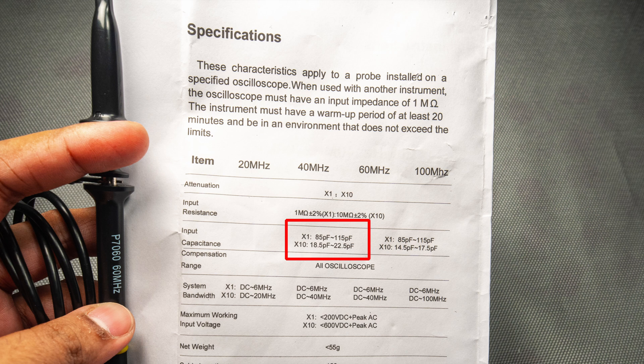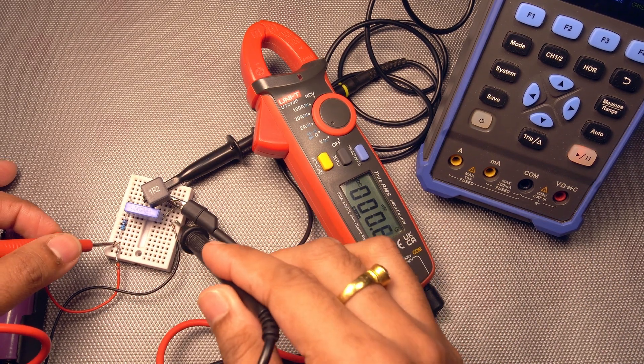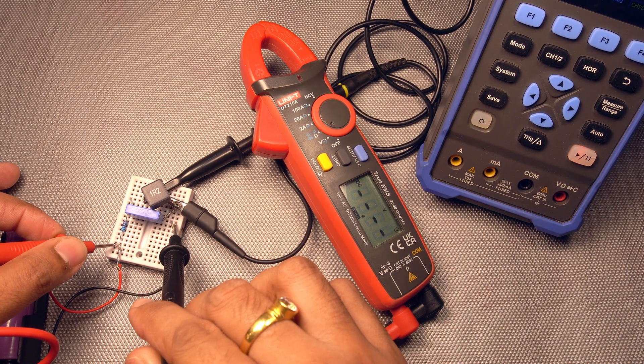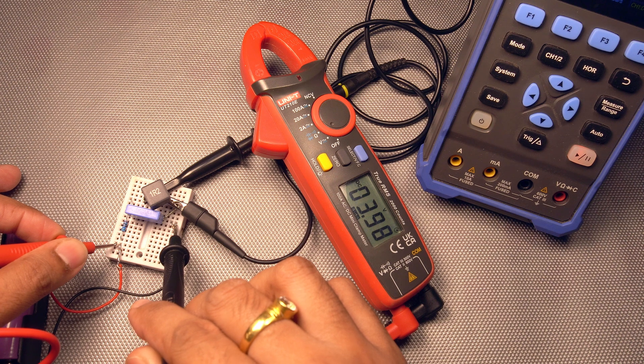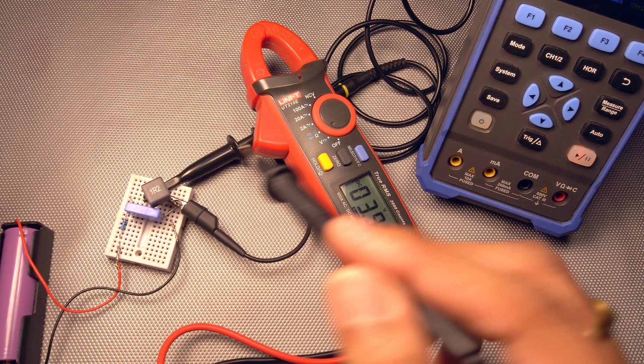So it's better to put it to 1x. But if you are using a very small value capacitor, then you must choose 10x so that the capacitance loading does not happen. If you are curious, the voltage that I'm using in here is 3.99 close to 4 volts.